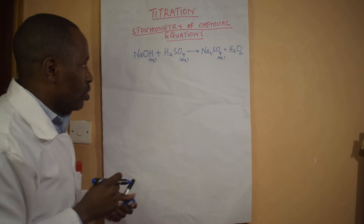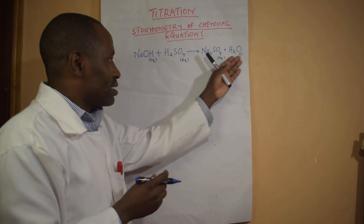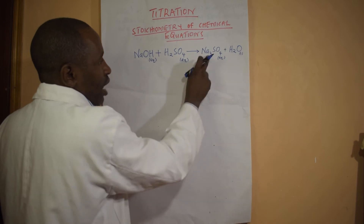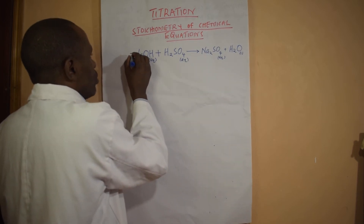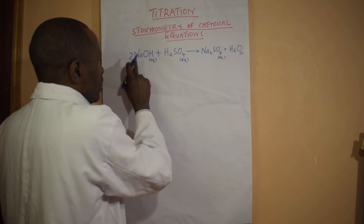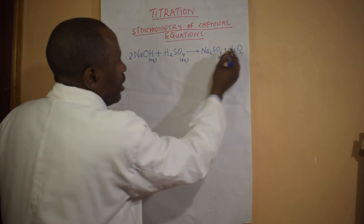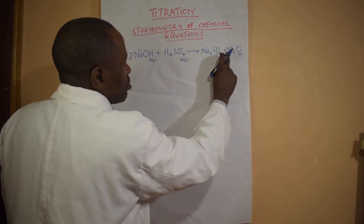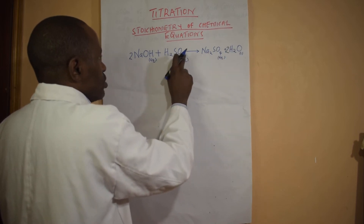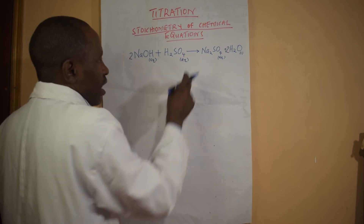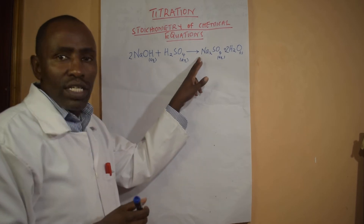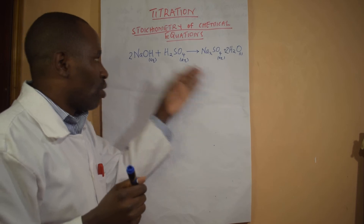Sodium sulfate is soluble. Now let us analyze this equation. Before we get to this, I want us to balance it. I have two sodiums on my right, so if I put two here I'll have two sodiums. With two sodiums we also have two hydrogens plus two, giving four hydrogens. If I put a two there, two times two becomes four. I have four hydrogens, four oxygens plus two is six oxygens, two sodiums — and it is balanced. A balanced chemical equation we call a stoichiometric equation.